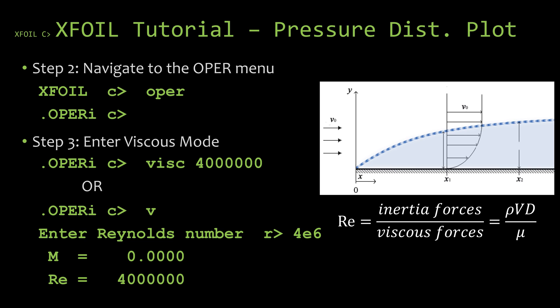But this is where it diverges. As mentioned in the previous video, the default mode for the OPER menu is to be an inviscid mode. However, we're wanting to do a viscous analysis. So the next step is in this OPER menu, we're going to go and enter viscous mode. Now that's done by using the visc command, V-I-S-C, visc, or just the letter V. V is the shortcut for viscous. Now if you type these in, it will actually put the software, put the X-FOIL into the viscous mode.